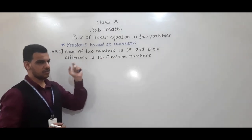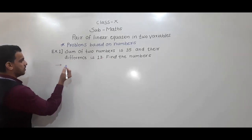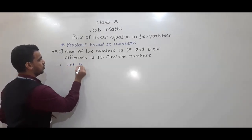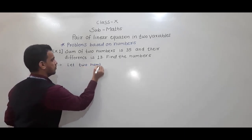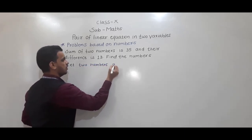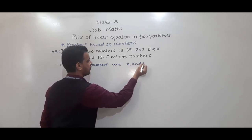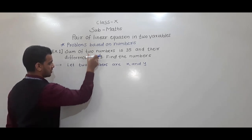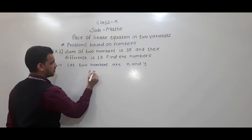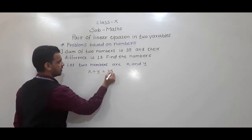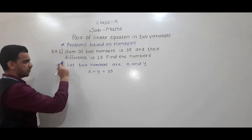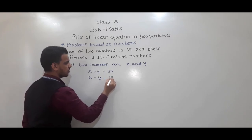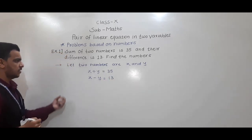The first problem is: the sum of two numbers is 35 and their difference is 13 — find the numbers. So let two numbers be x and y. Using the first condition, we can write equation 1: x plus y is equal to 35. And their difference is 13, and assuming x is greater than y, x minus y is equal to 13.